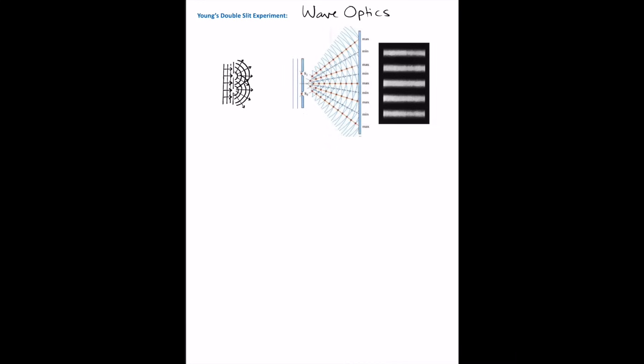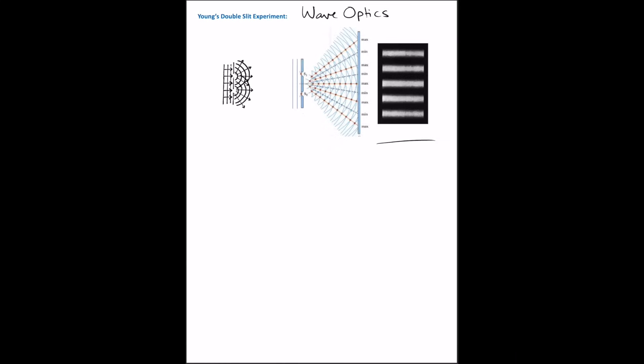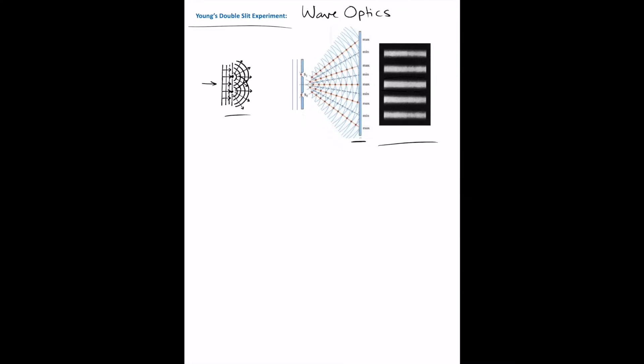Wave optics discusses the interference and diffraction of light — two phenomena that cannot be explained using the ray approximation but require including the full wave nature of light. To produce a stable interference pattern, two waves must maintain a constant phase relationship, known as coherence. A common way to produce two coherent light sources is to use a monochromatic source — a light wave of a single wavelength — to illuminate a barrier with two slits. Because of diffraction, if each slit's dimension is much smaller than the wavelength, each slit acts as a point source of coherent light with the same frequency as the original source.